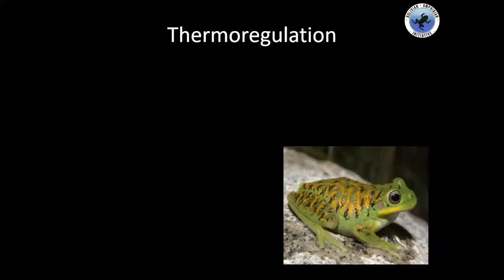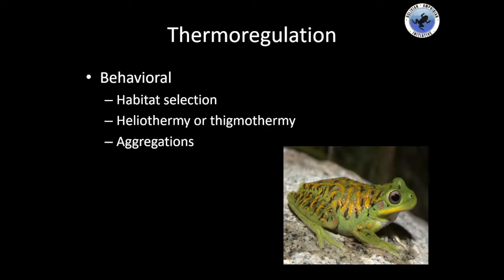There are different ways that amphibians can thermoregulate. Some of them bask during the day to get solar radiation and increase their temperature. These changes can be behavioral — choosing different habitats — or through heliotermy or tigrimotermy, getting direct sun or getting sun reflected from other surfaces like rocks.